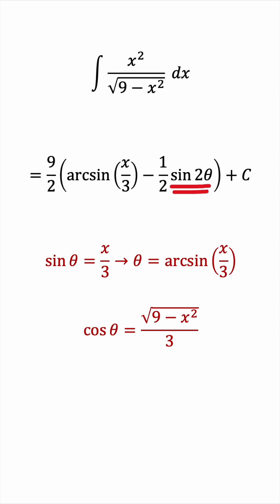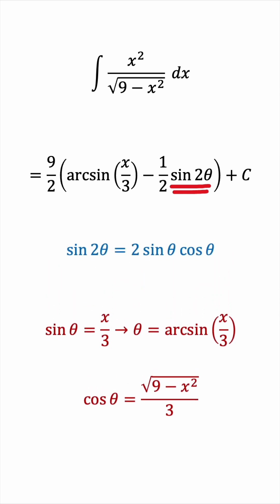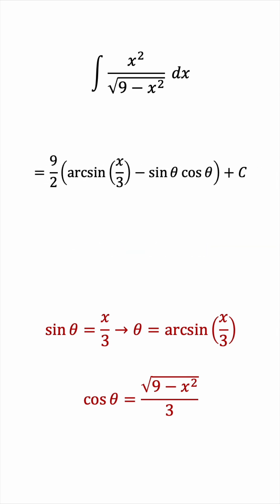To deal with sine 2 theta, we have to use the double angle identity, but this time for the sine. Replacing sine 2 theta by 2 sine theta cosine theta, notice that the 1 half and 2 cancel out, and then sine cosine are precisely what we have in terms of x. So if we replace them with their equivalence, we get the following.